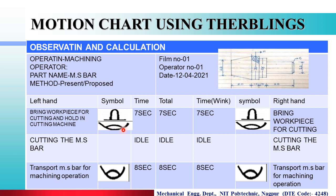Loaded का यह symbol है. तो यहाँ पर दोनों symbols आए, because आप Hold करके रखने हो Cutting Machine पे, और आप Cutting Operation कर रहे हो, और उसको Transport कर रहे हो Cutting के लिए — Transport Loaded. That's why Transport Loaded and Holding Symbol है. Left Hand और Right Hand दोनों एक ही साथ काम कर रहे हो, तो दोनों के लिए same seconds लगेंगा. Total Operation Time 7 seconds.